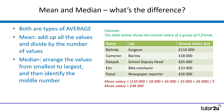That gives us a mean salary of £48,400. Hopefully you can see that this value is quite high compared to the salaries of Cameron, Ellen, and Faisal, whose salaries are much lower. So this mean is not particularly reflective of the living standards of those three. Our median salary is calculated differently — we order the salaries from lowest to highest: Cameron at £18,000, then Ellen and Faisal, then Deepak, and then Belinda as our surgeon at £110,000.